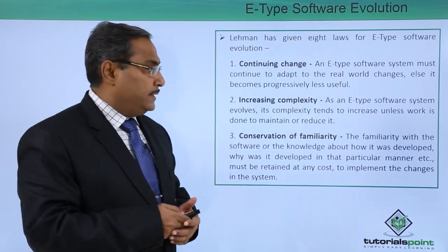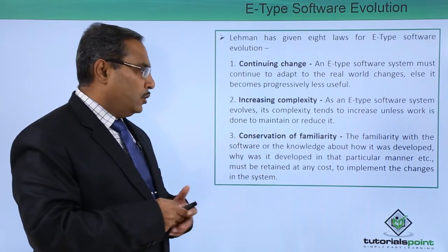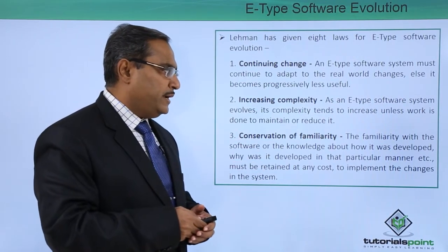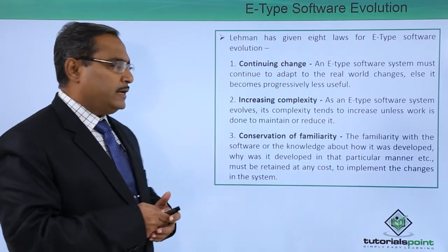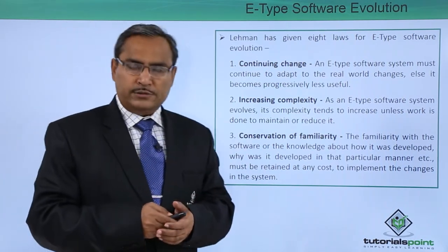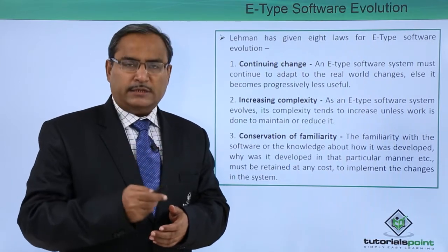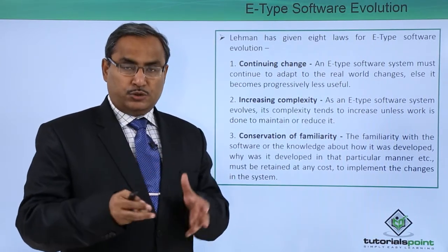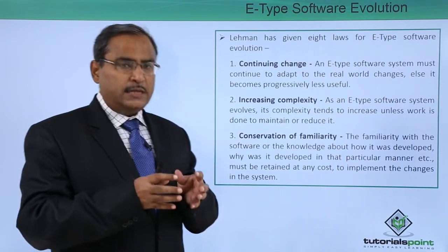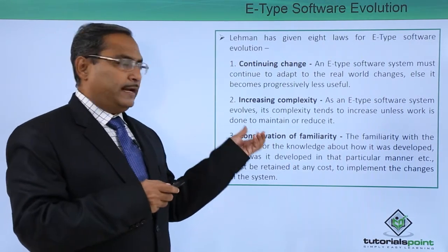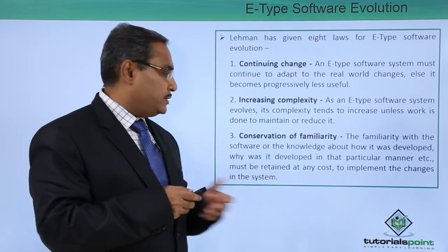The second law is increasing complexity. As an E-type software system evolves, its complexity tends to increase unless work is done to maintain or reduce it. Over time, the complexity of a software will increase, so some preventive measures and actions are to be taken to maintain it and to reduce it.